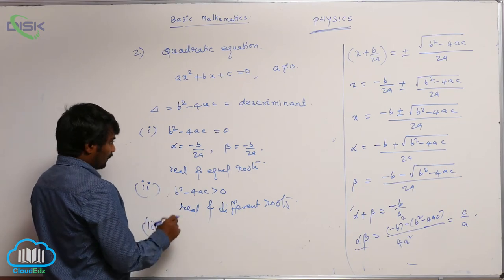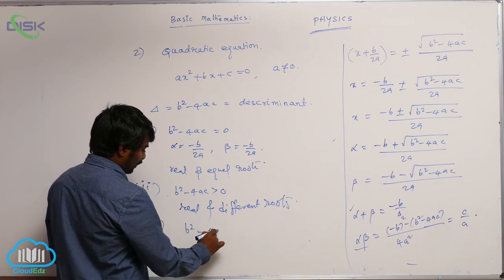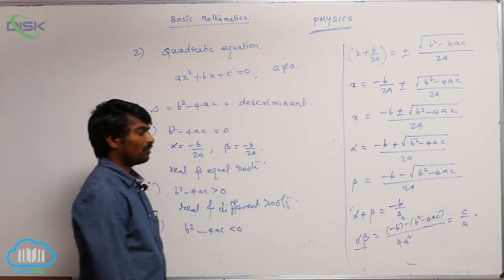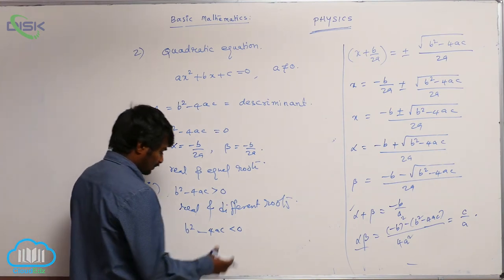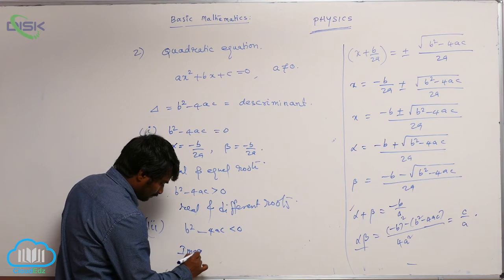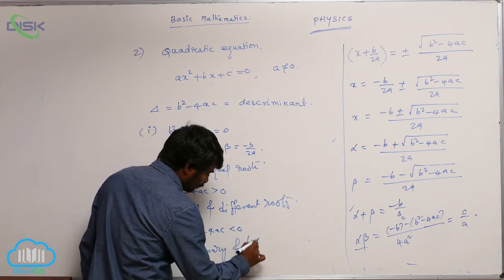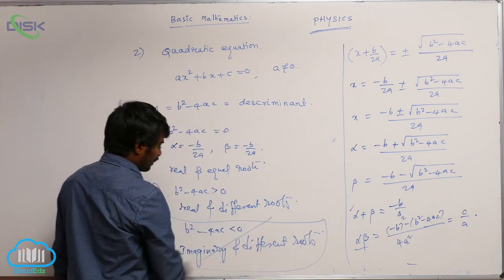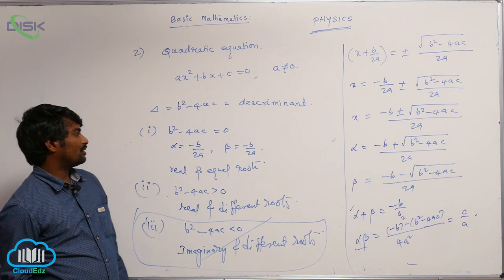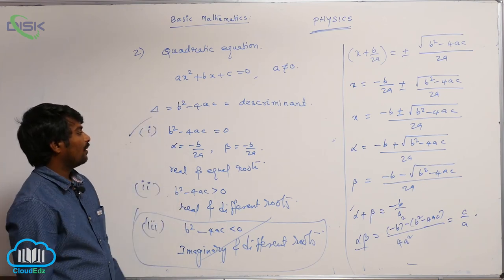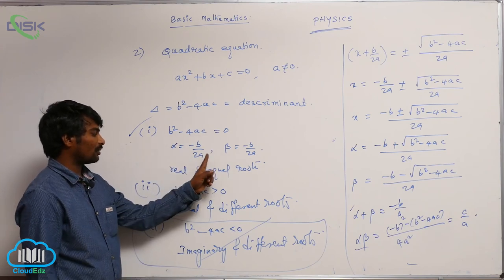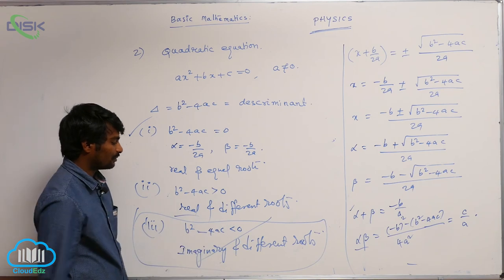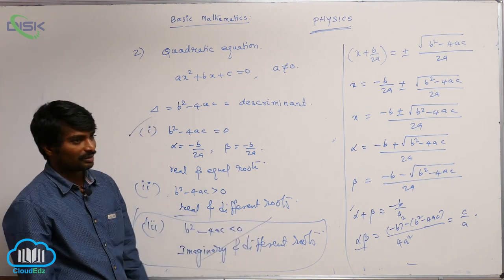Third condition: if the discriminant B squared minus 4AC is less than 0, you will be taking the square root of a negative value, which we call the imaginary part. So you will be having imaginary and different roots. However, this case we will never use in our physics, so just focus on the first two cases: discriminant equal to 0 gives two real equal roots, and discriminant greater than 0 gives two real different roots.